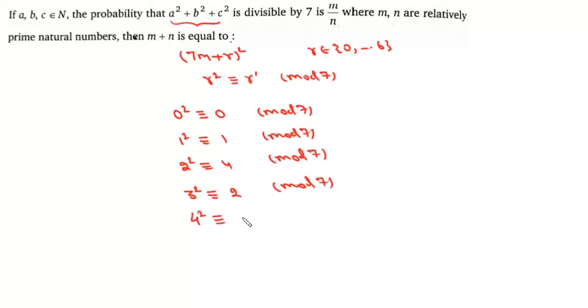4² is 16, which again is 2 modulo 7. 5² is 4 modulo 7, and 6² is 1 modulo 7. These are the possible remainders for 7m + r where r can take these 7 values.